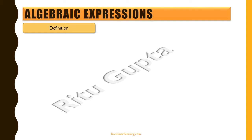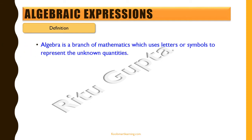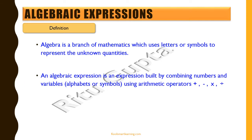Let's first try to understand what is algebra and then we'll move on to algebraic expressions. Algebra is a branch of mathematics which uses letters and symbols to represent unknown quantities. An algebraic expression is an expression built by combining numbers and variables in the form of alphabets or symbols using arithmetic operators like subtraction, addition, multiplication and division.